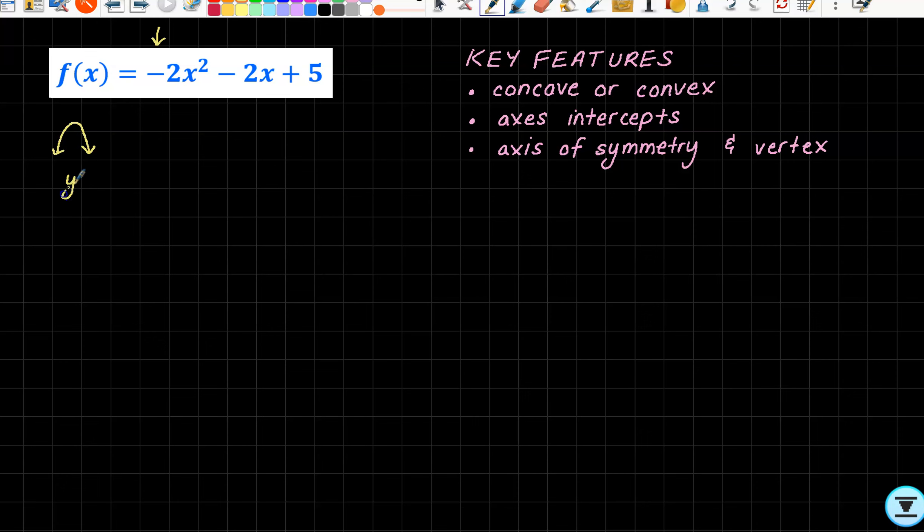The next thing that we know or can see quite easily, but we're still going to write it down nicely, is our y-intercept. Because that shines through when x is zero. We can see that our y-intercept will be zero, five.